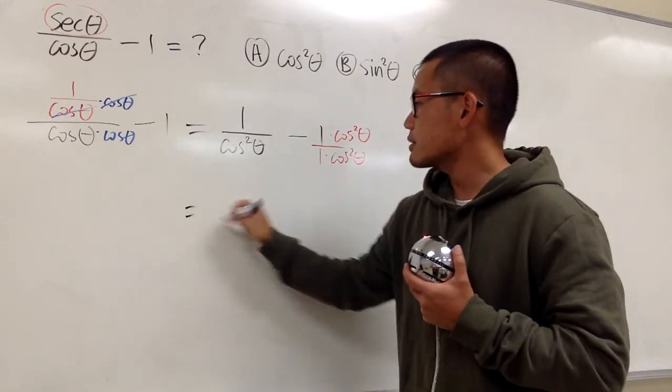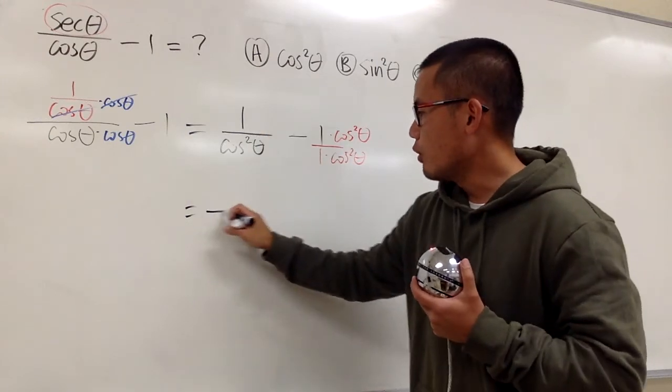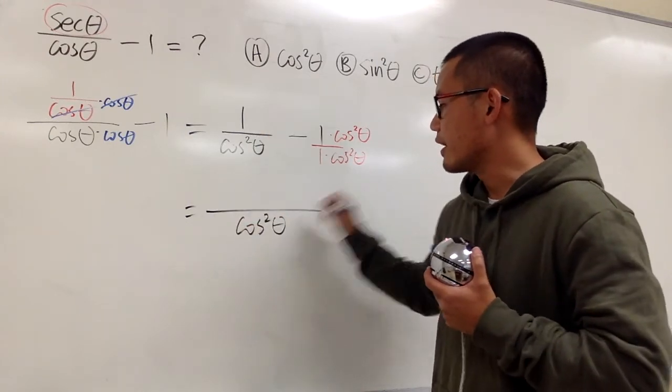And when we do that, this and that are the same. So we can just say, this is going to be over cosine squared theta.